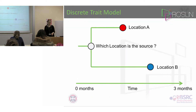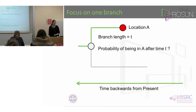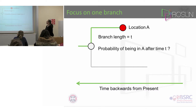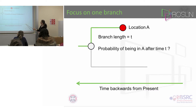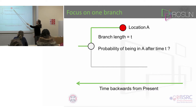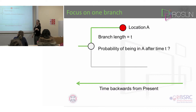Back to our question: which location is the source. We have a timescale tree, and this little branch length here is time T. Fundamentally, we're asking: what is the probability of being in state A after time T? Now, remember, we're thinking in population genetics. Time T runs backwards from the present. So this is what we know, and a time T ago, which location will it be in?